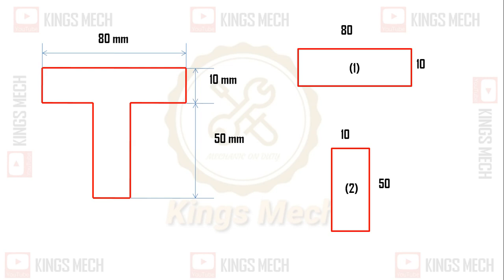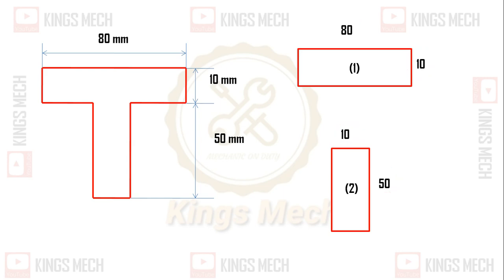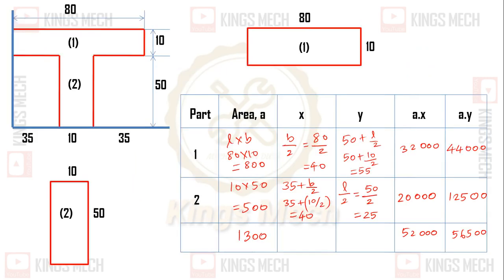For part separation, we separate into two end parts. The first part has dimensions 80 into 10. The second part is 10 into 50. Taking the base point as the centroid reference, we set up the x-axis and y-axis. The area of the first part is 80 into 10, which is nothing but 800.